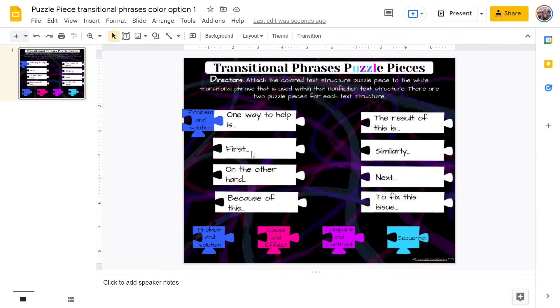Moving down, we have the transitional phrase first. Students will think to themselves, where would I see this type of transitional phrase, and that would be a sequential text structure. That would be, for example, a recipe or directions on how to put something together. So we're going to grab this teal puzzle piece, and we're going to drag it over. I'm going to use the shift keys to place the puzzle piece a little bit more accurately.